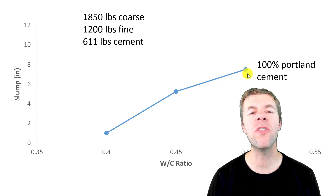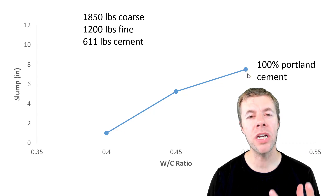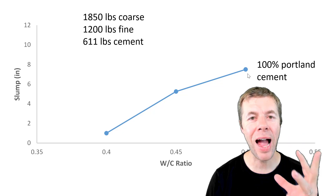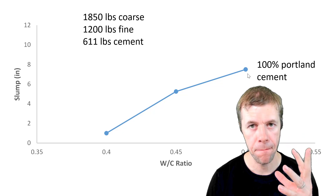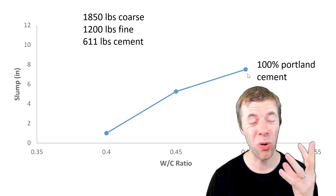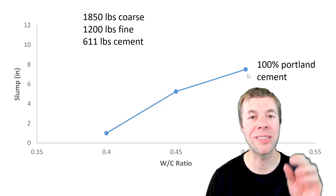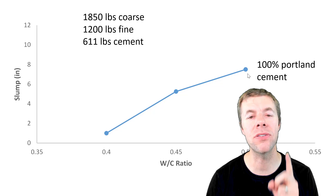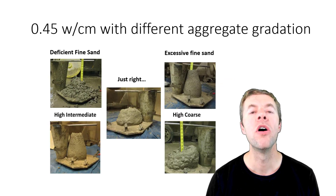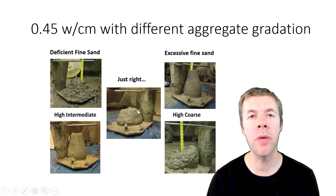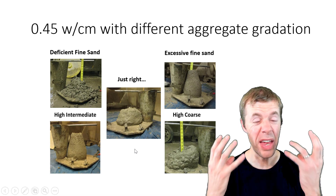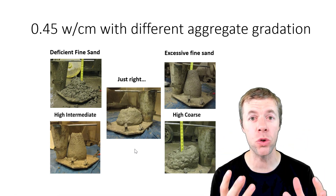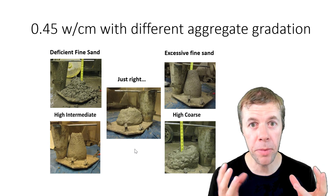But let's talk about what happens if you change the aggregate gradation. All these mixtures I'm about to show have the exact same mixture design on paper, but they're a little bit different — the size distribution of the aggregates is different, and that will change the slump. For example, this mixture in the middle has about a six inch slump. It was right in the middle of the tarantula curve — a beautiful concrete mixture.